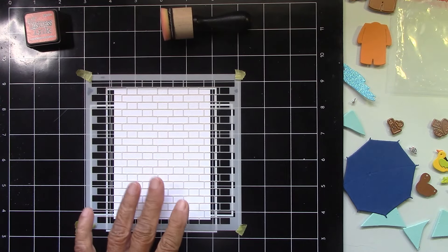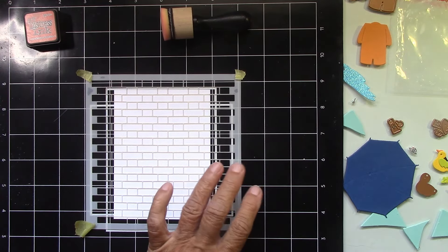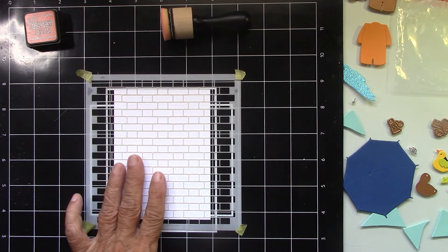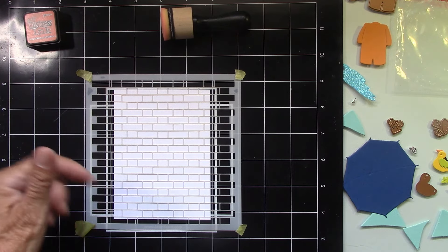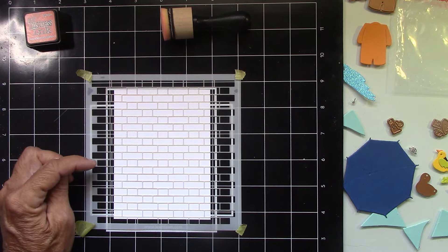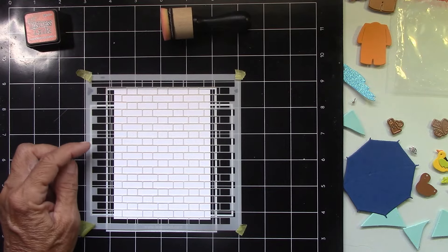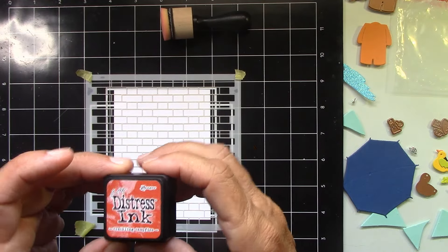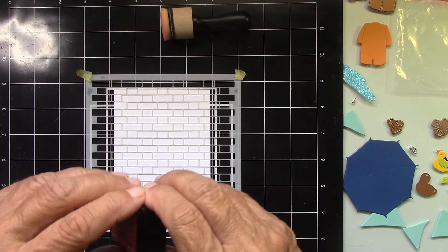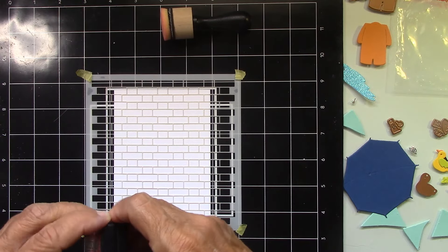Okay, so I have my brick stencil out here. I got this from Lawn Fawn and a piece of white cardstock, Neenah white cardstock. I get that from Amazon. That's listed below also. And it is 5 by 3 and 3 quarter. So I want to use my new Distress inks that I got, these little cubes, and this is Crackling Campfire.